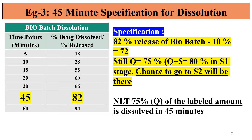Example 3: you got 82% at 45 minutes. Can you give a Q point of 72%? No. We can give a Q value of 75%, and Q plus 5 is 80%. In this case, there are more chances that dissolution will go to S2 stage and more batches will move to S2 stage if we give a dissolution limit of 75% Q. Some batches may even go to S3 stage, because this is somewhat tightened criteria for the specification for the product.